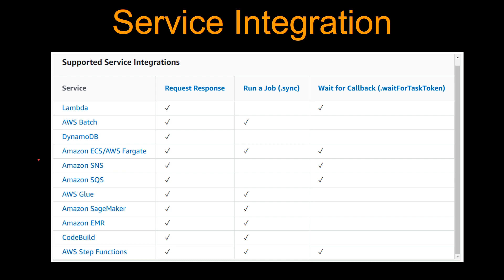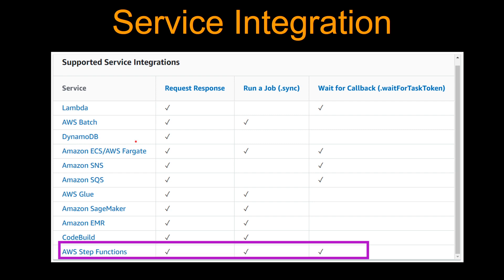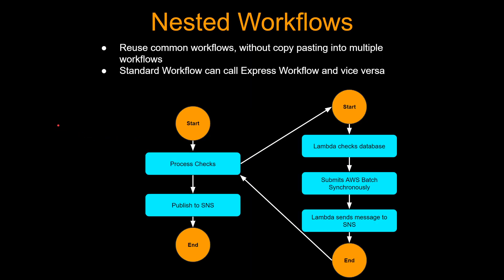Going back to the chart, you may have noticed it also has step functions listed — step functions integrating with step functions. You can call one step function from another step function using nested workflows. You can reuse common workflows without copy-pasting into multiple workflows, and standard workflows can call express workflows and vice versa. For example, a step function might have a step called process checks, and that step can in turn call another step function which calls a Lambda, checks some database, submits an AWS Batch job synchronously, does some more business logic, sends a message to SNS, and then returns to the parent step function. Then the parent publishes to another SNS — pretty handy.